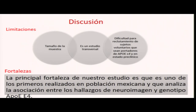Este estudio tiene limitaciones: tamaño de muestra, diseño transversal, y la dificultad de reclutar pacientes y obtener muestras de sangre sin financiamiento. Todo esto se hizo con apoyo de una convocatoria de CONACYT. La principal fortaleza es que tal vez sea el primer estudio en población mexicana que demuestra la contribución del estado portador de la apolipoproteína Epsilon 4 y las alteraciones en neuroimagen.